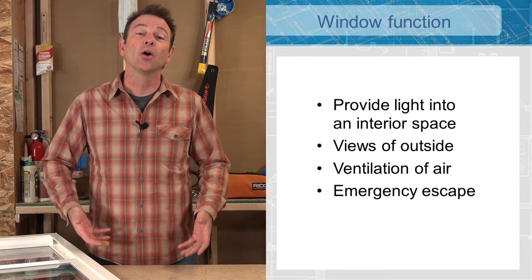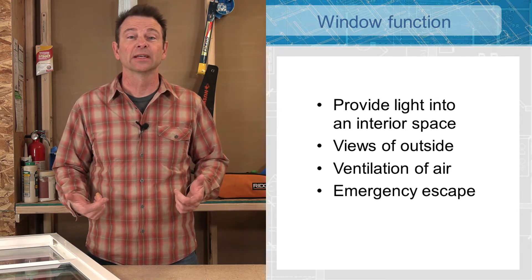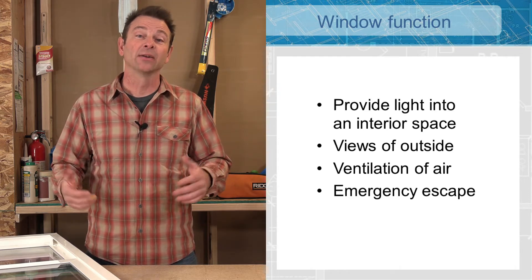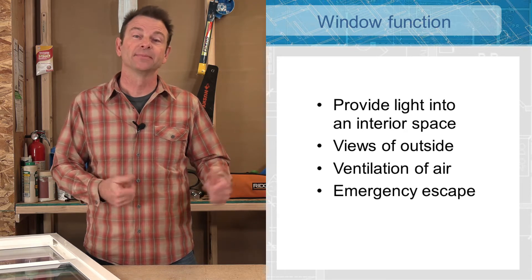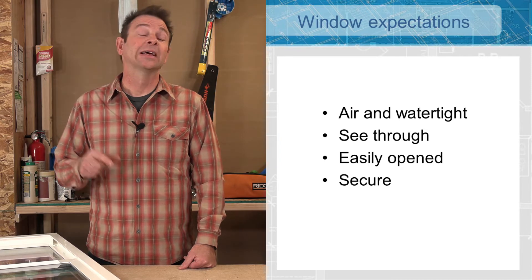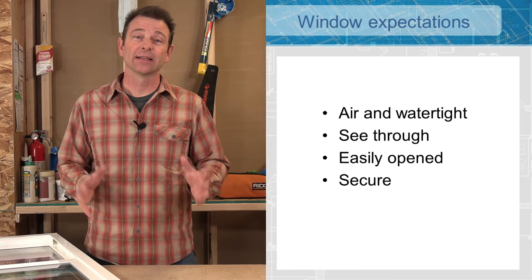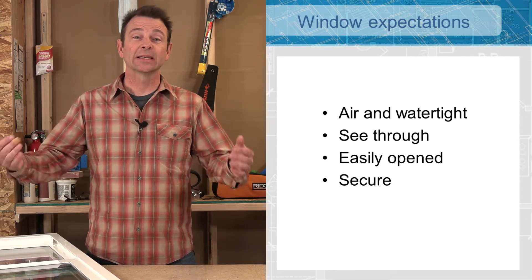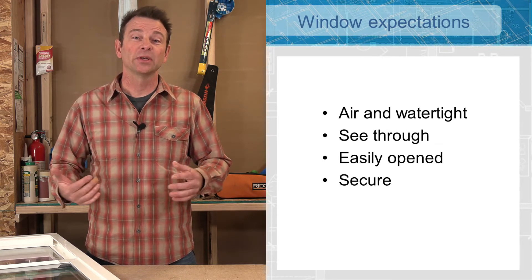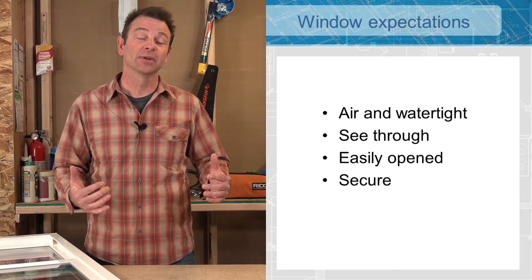A window also needs to open a lot of times. This will allow ventilation or fresh air into a building, and it also in an emergency could work as an escape route from a building that possibly could be on fire. So how does a window do these things for us? First of all it has to keep the weather out. It is basically a hole in the building but we need to seal it up.